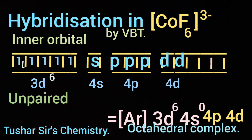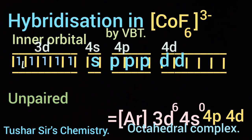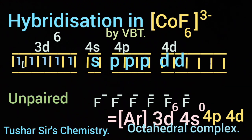6 vacant orbitals in hybridized state will be needed to form sp³d² hybridization. 6 F⁻ will form 6 coordinate bonds with 4s, three 4p, and two 4d orbitals. And the type of hybridization is sp³d².